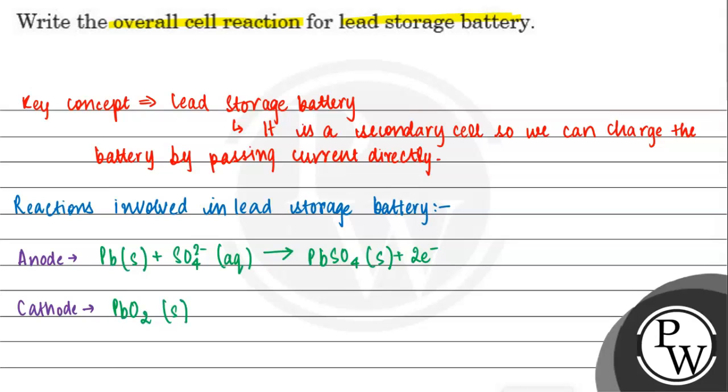At cathode: PbO2(s) + 4H+(aq) + SO4^2-(aq) + 2e- gives PbSO4(s) + 2H2O(l).